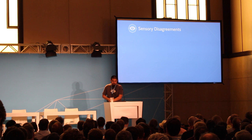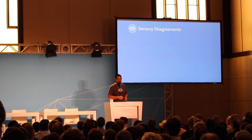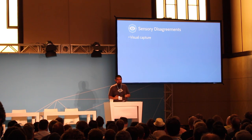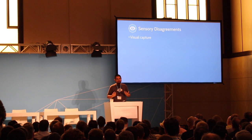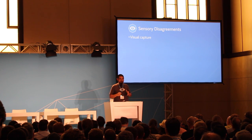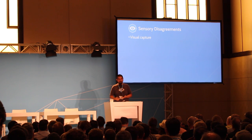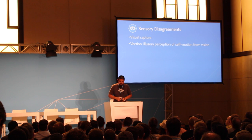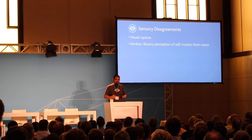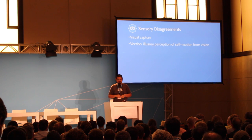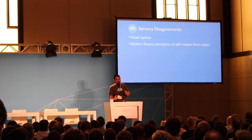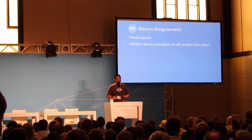This brings us to the third section: sensory disagreement. To bring up visual capture again — vision can overtake whatever your other senses are reporting and lead to a conscious percept that's whatever your vision is telling you is happening. The most common anomalous experience you would have with the Rift is what's referred to as vection — the term perceptual scientists use for any kind of illusory perception of self-motion based on visual information. Vision tells you that you're moving through space; your body says you're sitting still in a chair — and that leads to a sensory disagreement.